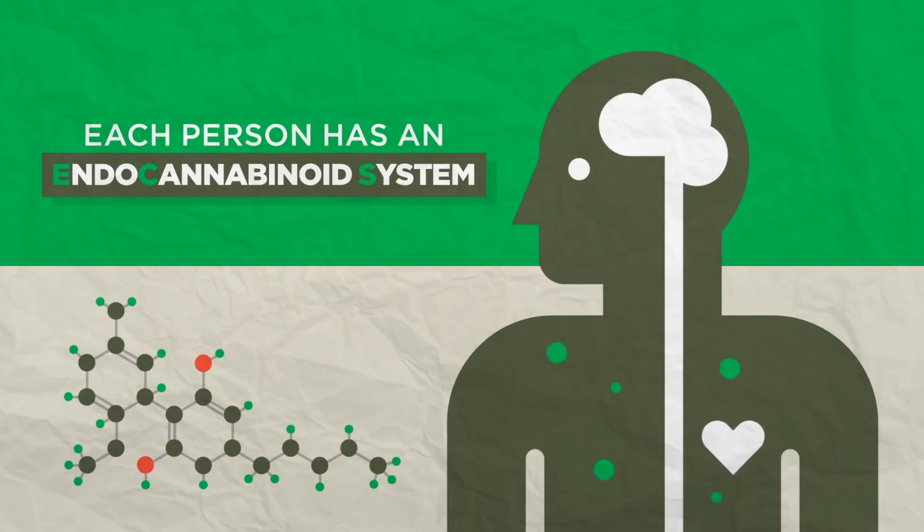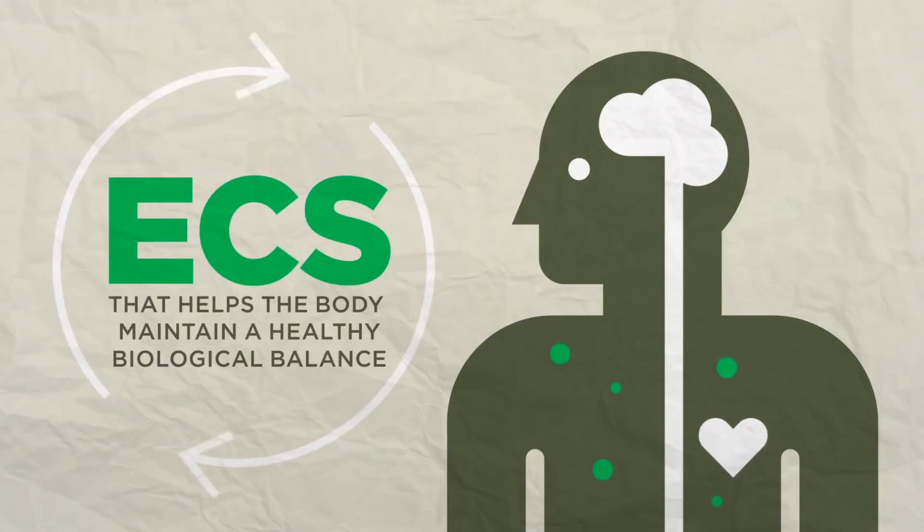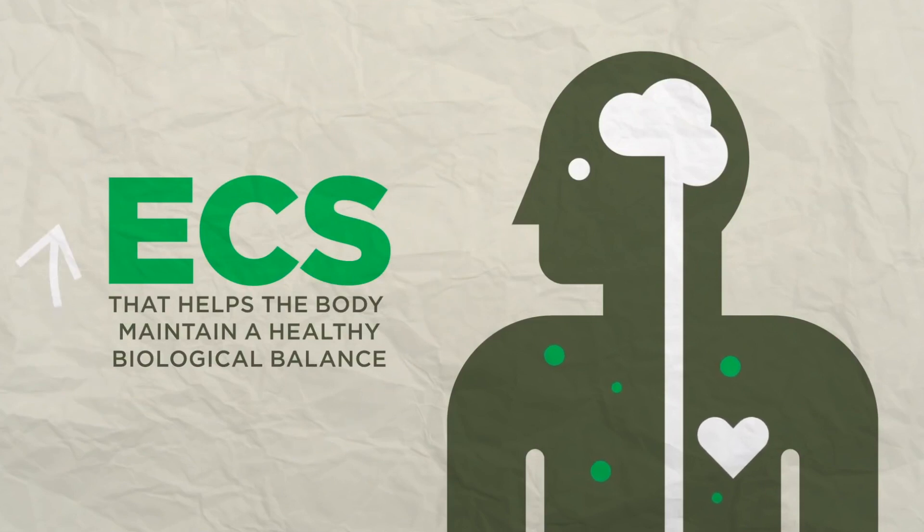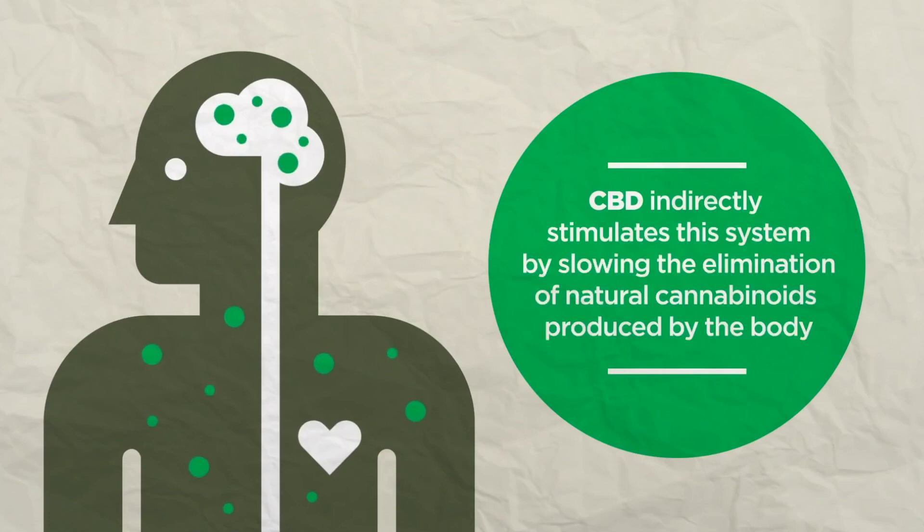The endocannabinoid system, also known as the ECS, is an internal system that was discovered in the 1990s. The ECS is responsible for many of our biological processes and helping our bodies maintain balance.